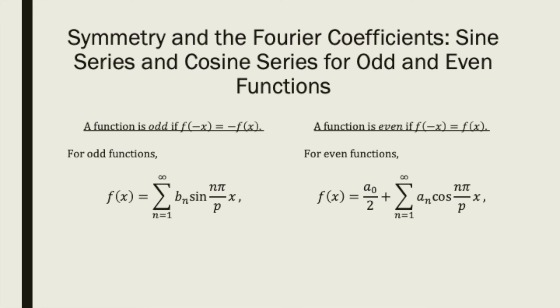We can do this because the sine functions themselves are odd functions, while the constant function and cosine functions are even, i.e. they exhibit the symmetry f of negative x equals f of x for all x on the real line.